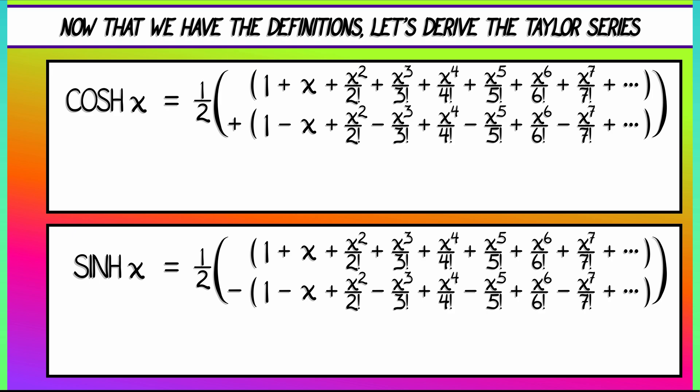e to the x, we know that's 1 plus x plus x squared over 2 factorial, etc. What's e to the minus x? When we substitute minus x into those, all of the odd degree terms pick up a minus sign. And now, we need to add all these guys together.